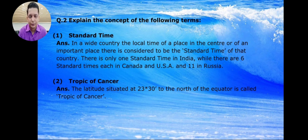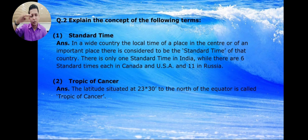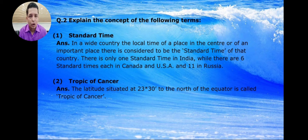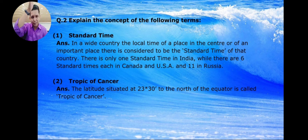Latitude lines run horizontally — the center line is the equator at 0 degrees, ranging from 0 to 90 degrees north and south. Longitude lines are the duration lines, also called meridians. The prime meridian passes through Africa and Europe at zero degrees, extending from 0 to 180 degrees east and west.